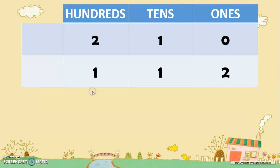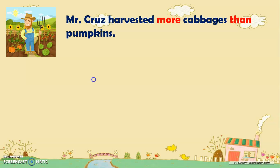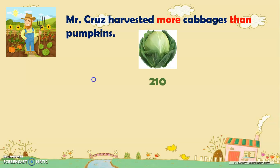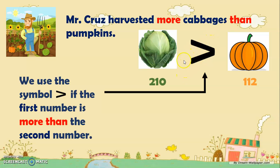In our place value chart, you can see that the number of cabbages has two hundreds, while the number of pumpkins has only one hundred. We know that two is greater than one. So Mr. Cruz harvested more cabbages than pumpkins. We have 210 cabbages and 112 pumpkins, and we can say 210 is more than 112. This is the symbol for more than. We use the more than symbol if the first number is more than the second number.